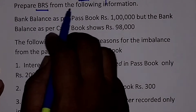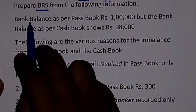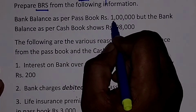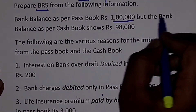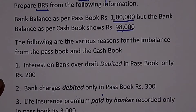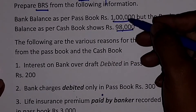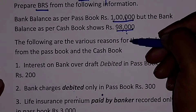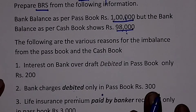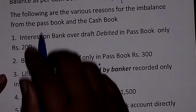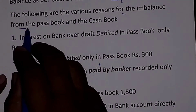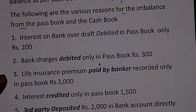Prepare BRS from the following information. Bank balance as per pass book is rupees 1 lakh, but bank balance as per cash book shows rupees 98,000. Because both book balances are not the same, that is the reason we are preparing the BRS. The following are the various reasons for the imbalance between the pass book and cash book.